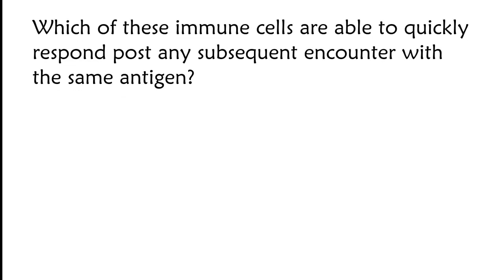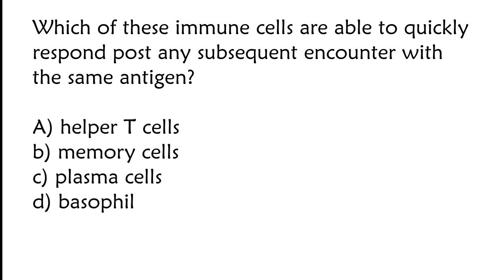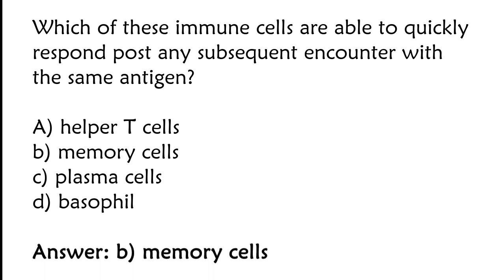Which of these immune cells are able to quickly respond first to any subsequent encounter with the same antigen? Options: helper T-cells, memory cells, plasma cells, basophil. The correct answer is option B. Memory cells.